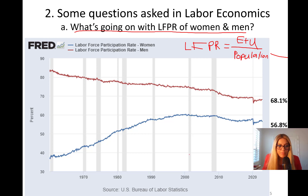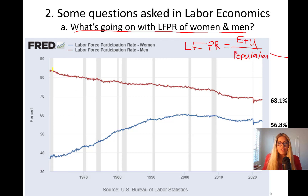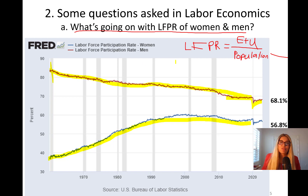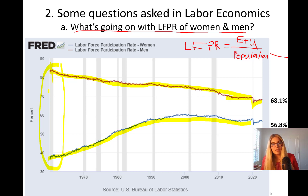Looking at this chart, the upper line represents men in the United States and the lower line represents women's labor force participation rate. The general trend is that women's labor force participation rate has been trending up while the male rate has been trending down. In the 1960s, male labor force participation was around 85% while female was only 38% — that's a huge gap.